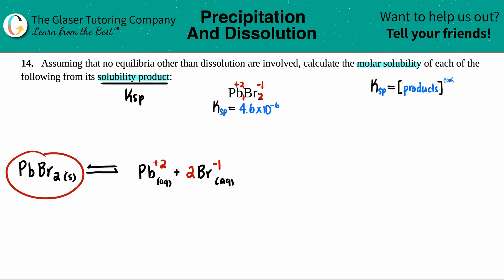It's just the concentration of products raised to the coefficients. No reactants allowed because no solids are allowed in any K expression. It doesn't change the equilibrium. So I have Ksp equals,